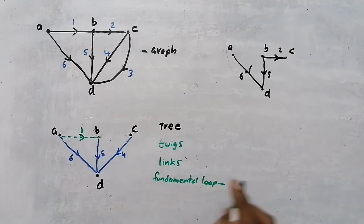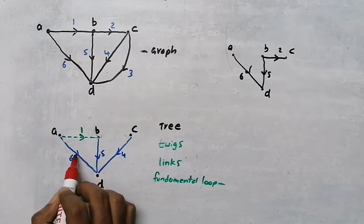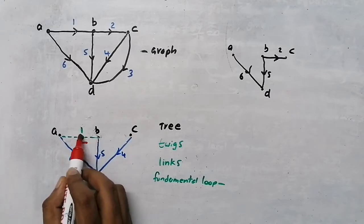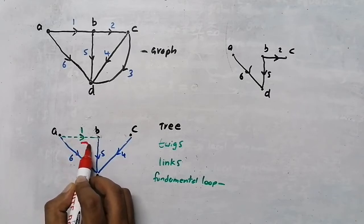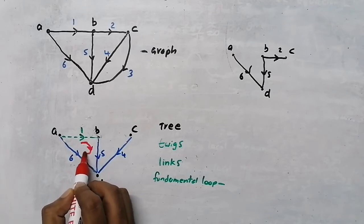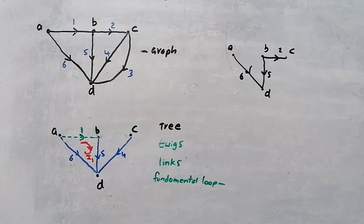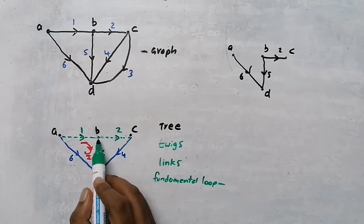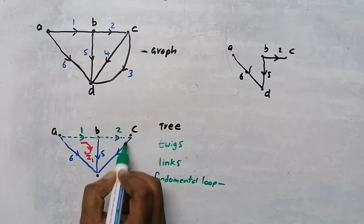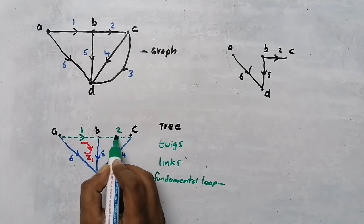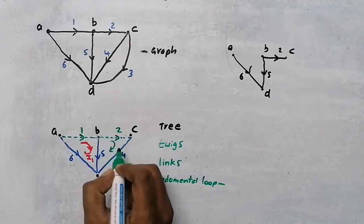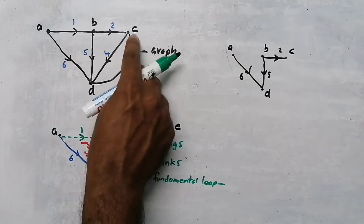A fundamental loop has one link and the remaining branches are twigs. If it is a loop, there will be a circulating current known as loop current or link current. The direction of the current will be in the direction of the link. I name this current I1. Similarly, I place link 2, which also forms a closed path. The direction of circulating current is in the direction of the link current, and I name it I2.